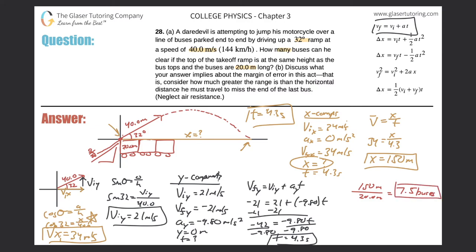Buses he can clear, but now how many buses? I mean, the answer is technically 7.5, but we can't cut a bus in half. So really, how many buses can he clear? He can safely clear, we can say he can safely clear seven buses. He can safely clear that many buses. So that would be the answer for letter A.